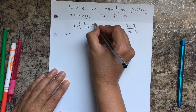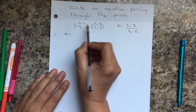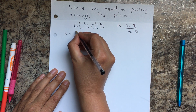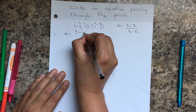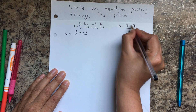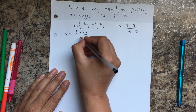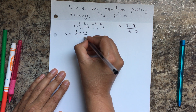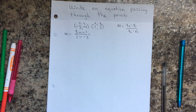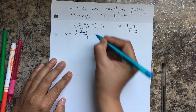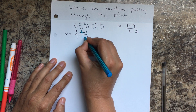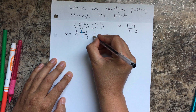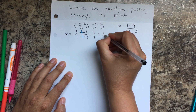So my slope here — if you need to label the points do so. You do 3 minus negative 1 over 1 minus negative 3. Now if you recall, two negatives together become a big plus. Negative and negative equals positive. So 3 plus 1 is 4, and 1 plus 3 is 4. And 4 divided by 4 is 1. So my slope equals 1.